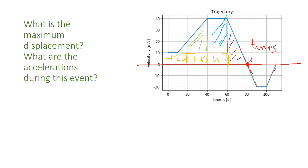Let's go ahead and start working on the yellow area. We have a length of 60 seconds and a height of 10 meters per second, which gives us 600 meters of area.